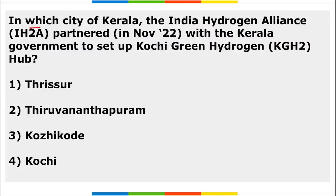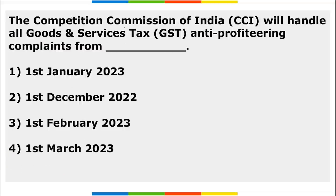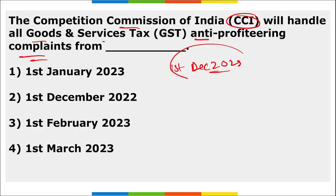India Hydrogen Alliance (iH2A) partnered with the Kerala government to set up the Kochi Green Hydrogen Hub in Kochi. The Competition Commission of India will handle all Goods and Service Tax anti-profiteering complaints from 1st December 2022.